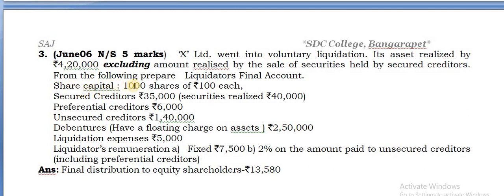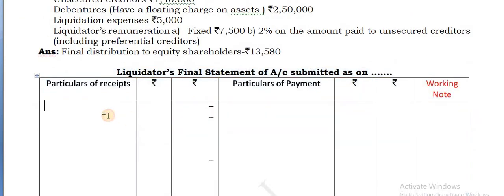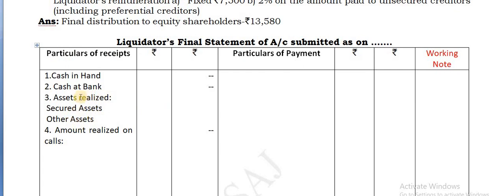Here the credit includes share capital. Share holders - if you can pay them, pay; if not, need not pay. But the format must include the share capital entry. So go for the format - liquidator's final statement account, debit side: cash in hand, cash at bank, secured assets, other assets as separate items.